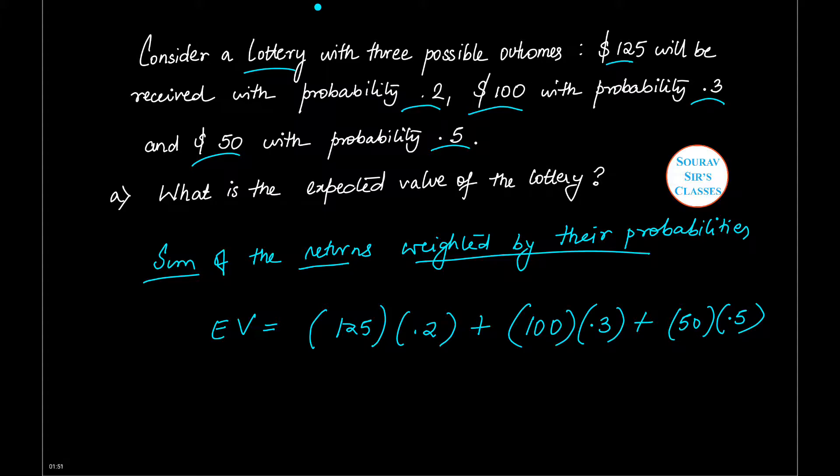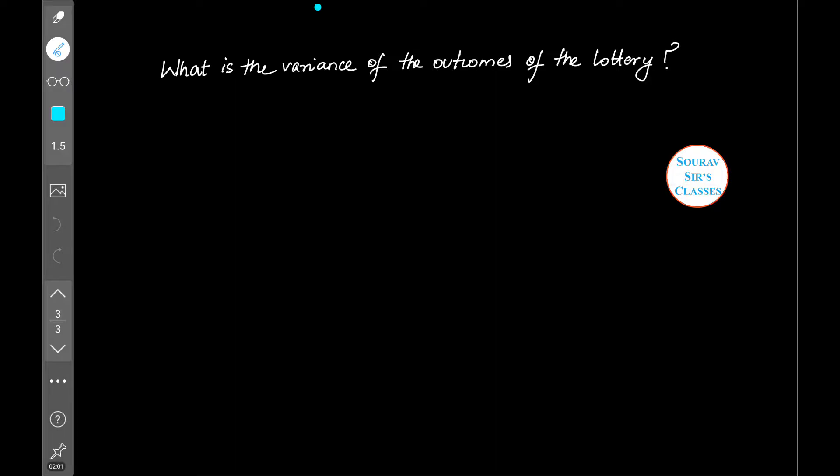Now you add all this and you will get $80, which is nothing but your expected value. Next, the question is what is the variance of outcomes of the lottery?